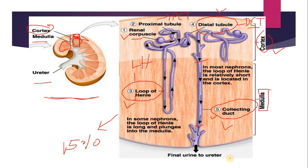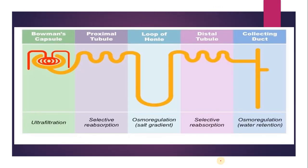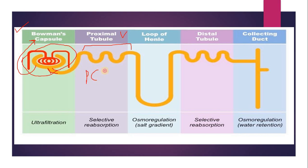Now let's move to another image showing the different parts of the renal tubule. The first portion is Bowman's capsule or glomerulus — this one is Bowman's capsule and the whole section is known as the glomerulus. From the proximal part of the glomerulus, the PCT arises, which is why this tube is called the proximal tubule or proximal convoluted tubule. This is the loop of Henle because it resembles a hairpin structure, with a descending side moving downward and an ascending side moving upward.